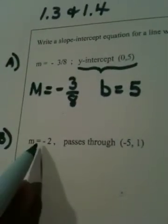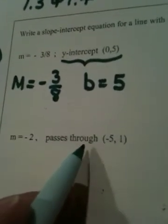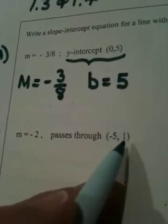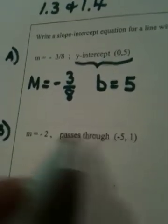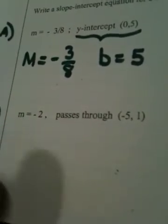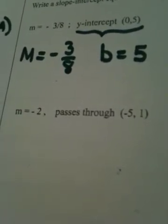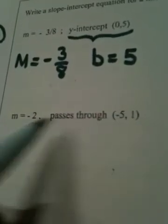Now in the next example, they gave us the slope is negative 2, and they told us the line passed through the point negative 5 comma 1. But we don't know B. There are two ways to do this problem. One way is to use the point-slope formula and plug in, and that would work, but it's not my favorite method. So I'm going to teach you the method I like. You can tell that we're missing B.